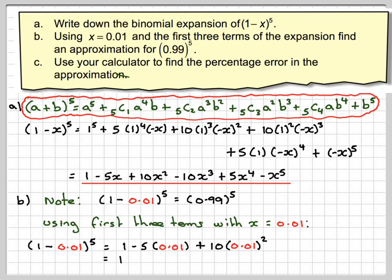So that's going to give me 1 minus 0.05 and then 10 times 0.01 squared is 0.001. The idea is to do this without our calculator.